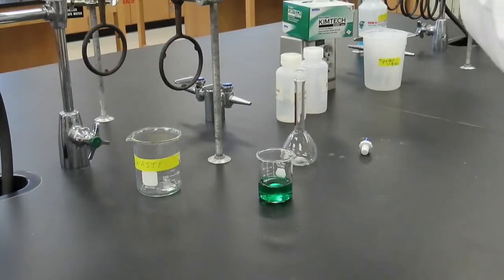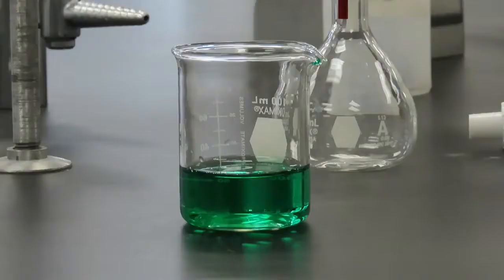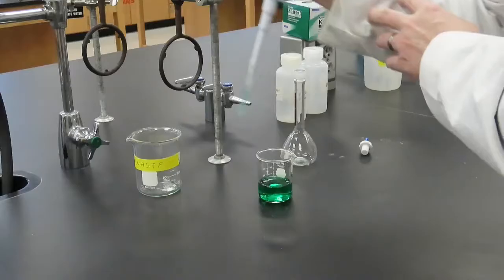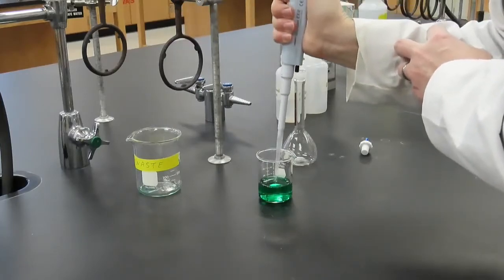Now we are ready to pipette. Hold the pipette vertically above your liquid. Press the plunger to the first stop and place the end of the tip just below the surface of the liquid.